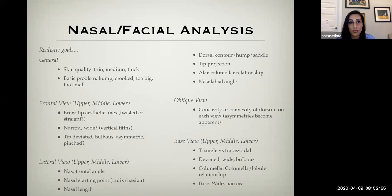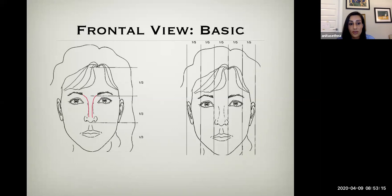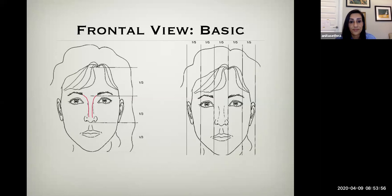We want to look at the frontal view in the upper, middle, and lower third of the nose. We want to look for the brow tip aesthetic lines, assess whether the nose looks narrow or wide, and evaluate the tip — whether it's bulbous, asymmetric, or pinched. The brow tip aesthetic lines run from the medial head of the brow to the tip defining points. Drawing those lines can help keep us systematic. The horizontal thirds and vertical fifths are all things to keep in mind.